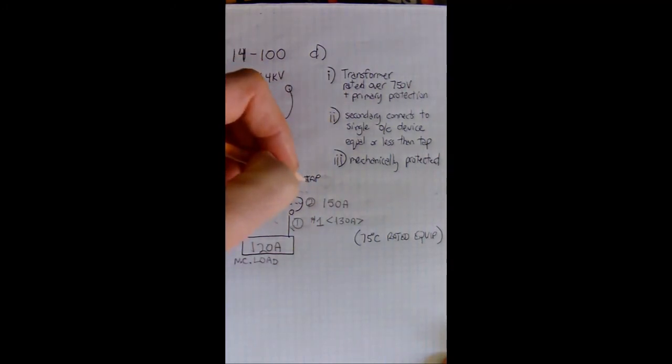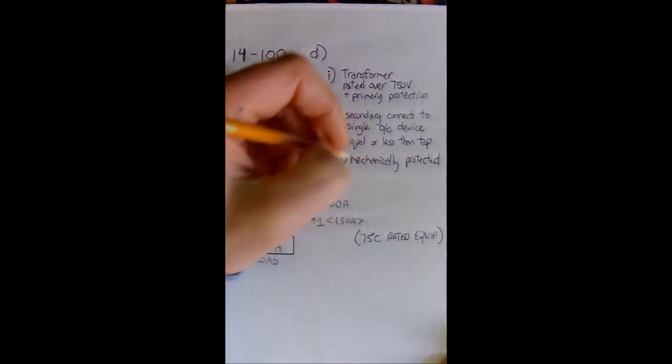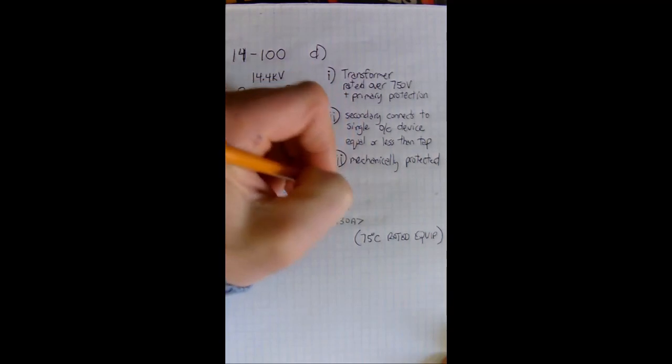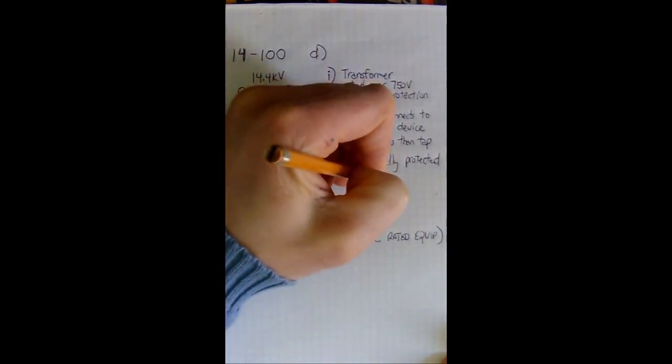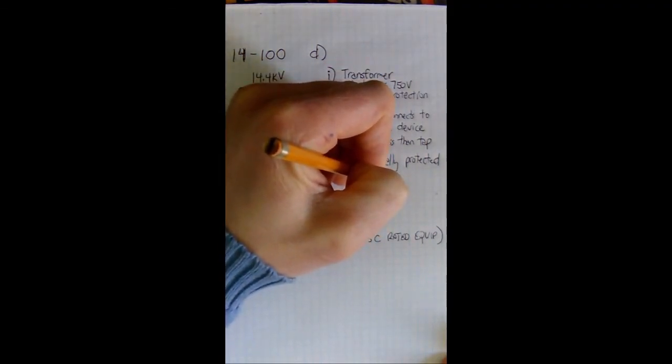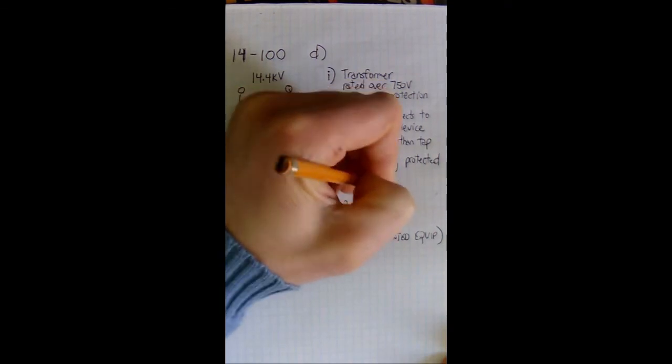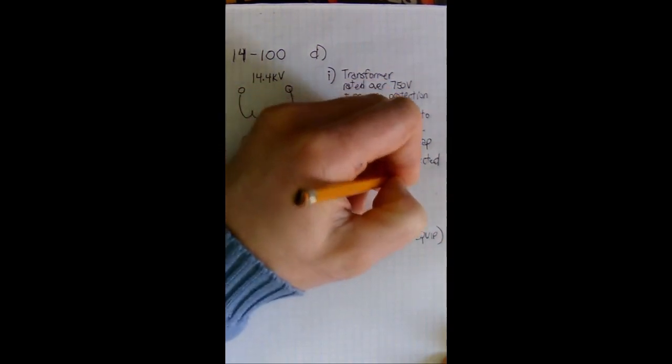This tap cannot be smaller than this overcurrent device, so we cannot put in a number one here even though it kind of looks like common sense tells us we can. No, this tap has to be equal or less than the overcurrent device. So then we're looking at a tap that has to be 150 amp rated, which will bring us then to the last example which is going to be a one awt, good for 150 amps.